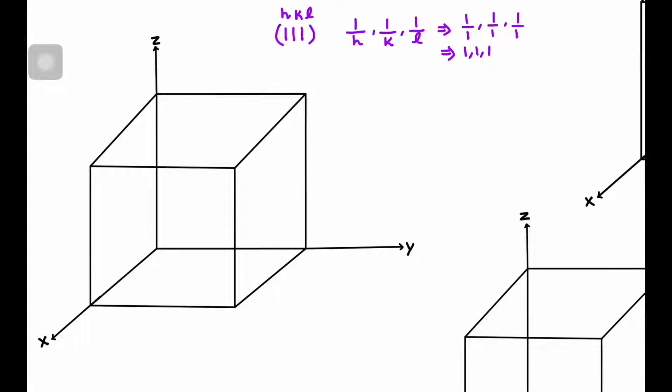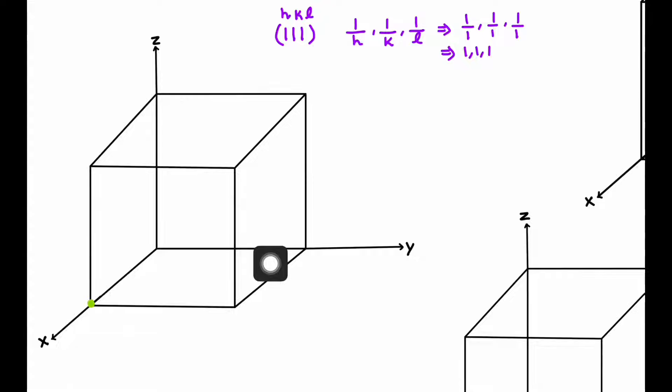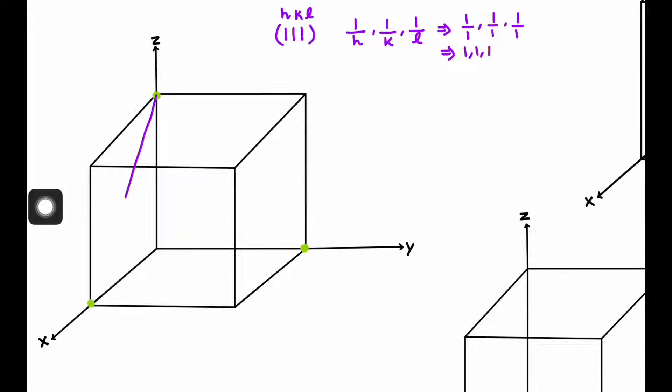So at the X axis, this plane will intersect at 1; Y also at 1, and Z also at 1. If I represent the point of intersection along the X axis, this will be the point of intersection at 1 unit. On the Y axis it will be intersecting at this point — that is 1 — and along the Z axis, this will be the point of intersection. Now we simply draw the plane by joining these points.